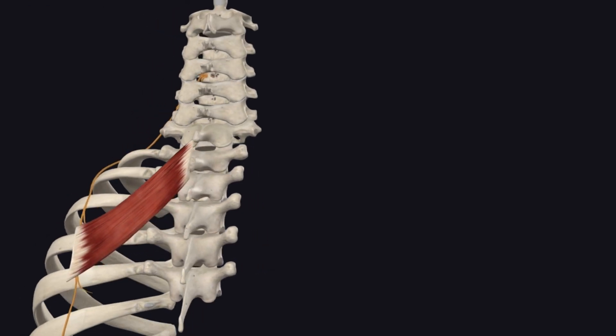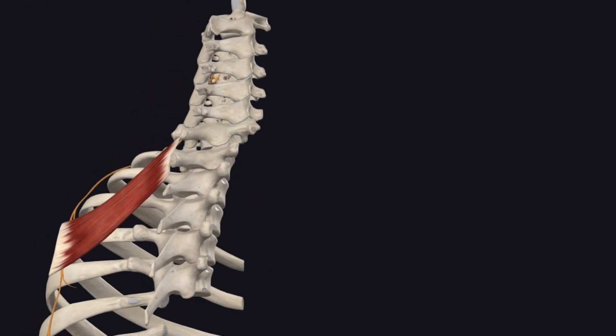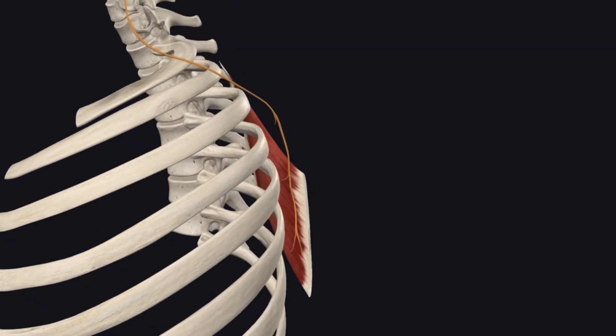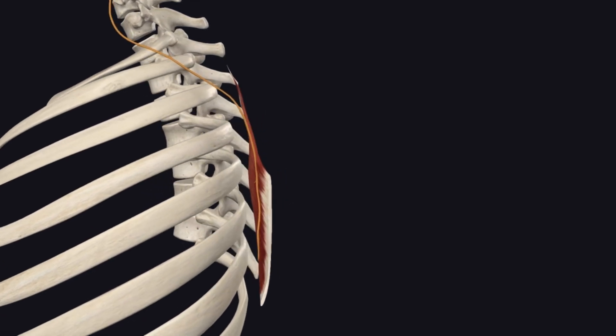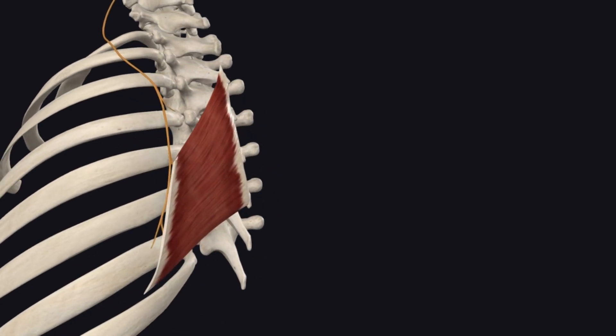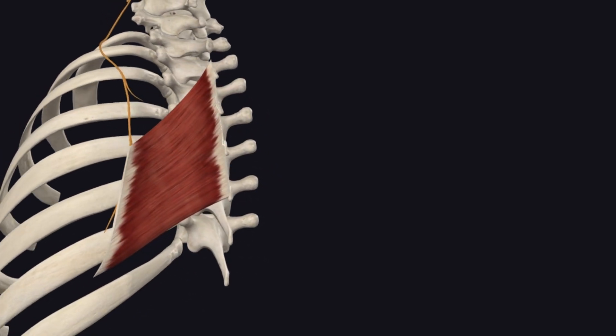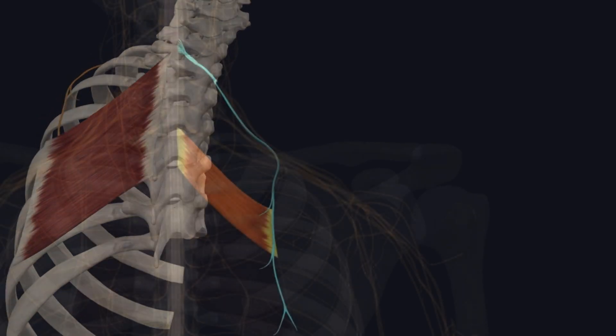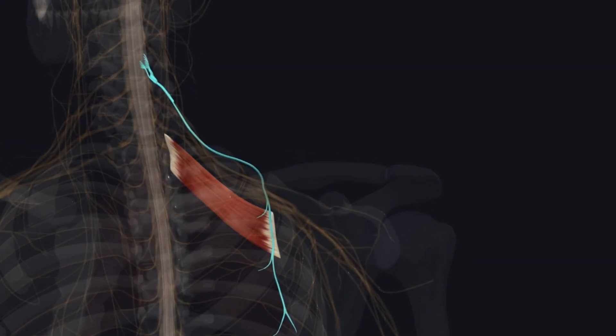There are some other similarities between the rhomboids and levator scapulae as well. To reiterate, the rhomboids are innervated by the dorsal scapular nerve with the primary nerve root being C5.